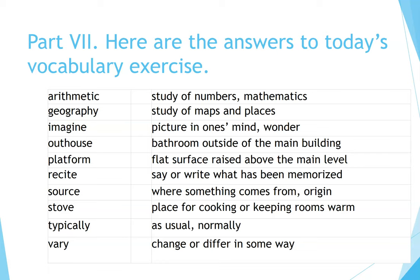Part 7: Here are the answers to today's vocabulary exercise. Arithmetic: study of numbers, mathematics. Geography: study of maps and places. Imagine: picture in one's mind, wonder. Outhouse: bathroom outside of the main building. Platform: flat surface raised above the main level. Recite: say or write what has been memorized. Source: where something comes from, origin. Stove: place for cooking or keeping rooms warm. Typically: as usual, normally. Vary: change or differ in some way.